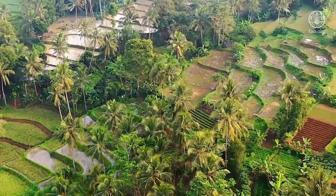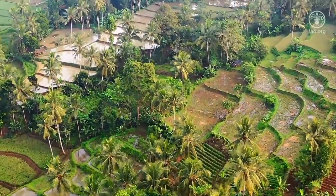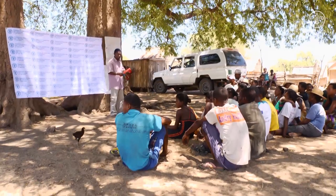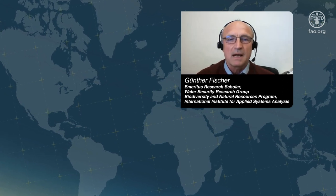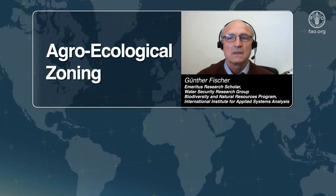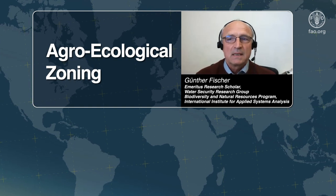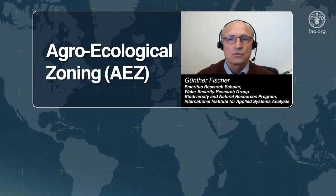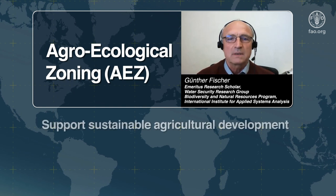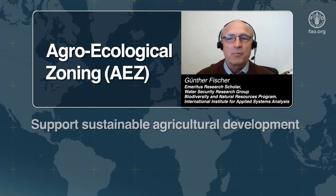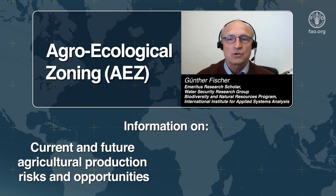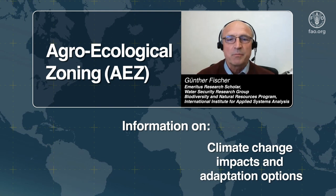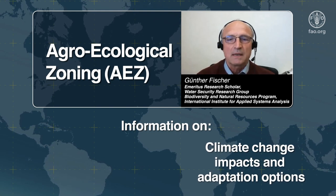FAO encourages the integrated management of natural resources in cooperation with various actors. Over the past three decades, FAO and IIASA have cooperated to develop and apply the agroecological zoning methodology and databases. The AEZ framework is a successful approach used in land evaluation to support sustainable agricultural development by providing information about current and future agricultural production risks and opportunities, climate change impacts and possible adaptation options.